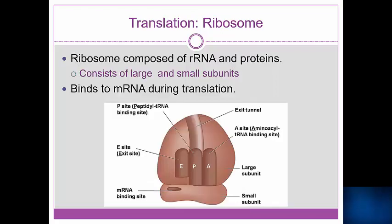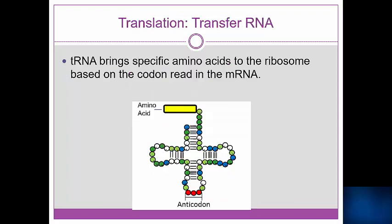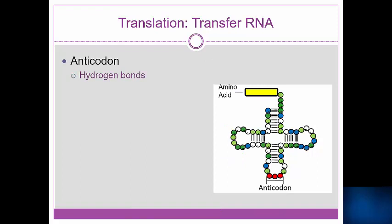We will now examine two other important molecules involved in translation. First is the ribosome. The ribosome attaches to the mRNA molecule and serves as the location at which the amino acids will form peptide bonds. The next important molecule is transfer RNA, or tRNA. tRNA molecules are responsible for transferring amino acids from the cytosol to the ribosome. tRNA molecules contain anticodons. The anticodon of a given tRNA molecule corresponds with the codon on the mRNA molecule. The anticodon forms hydrogen bonds with the codon to hold the tRNA molecule in place as translation occurs.